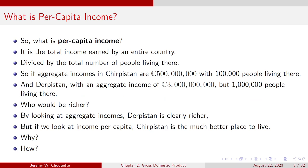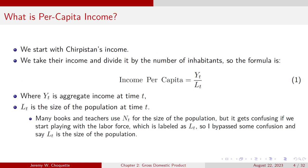So we need per capita income, or a measure at the average of how everybody's doing. Per capita income is essentially average incomes — the total income earned by an entire country divided by the total number of people living there. For example, if aggregate incomes in Chirpistan are 500 million catnips with 100,000 people, and in Derpistan we have 3 billion catnips but a million people living there, who's richer?